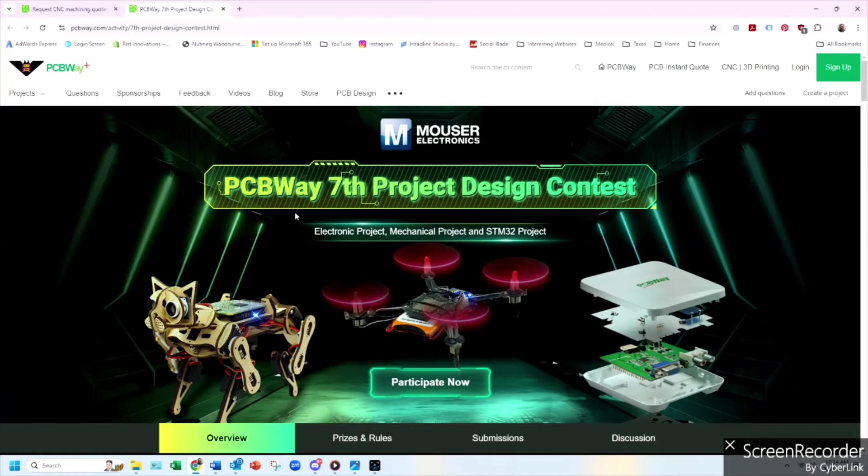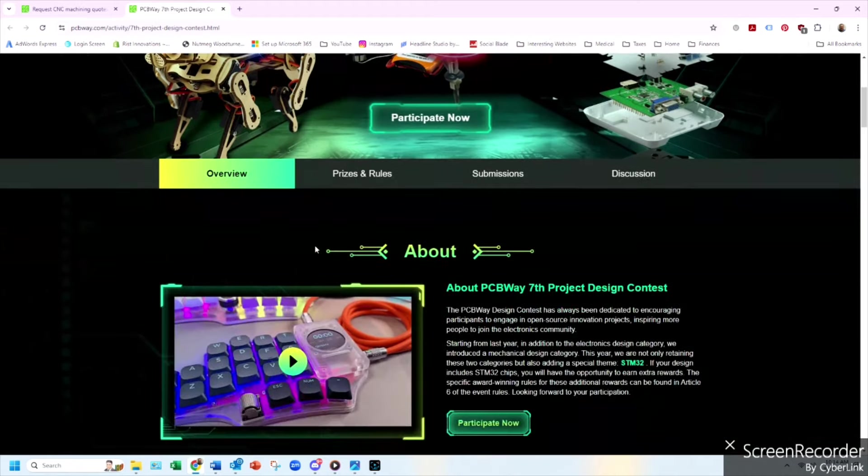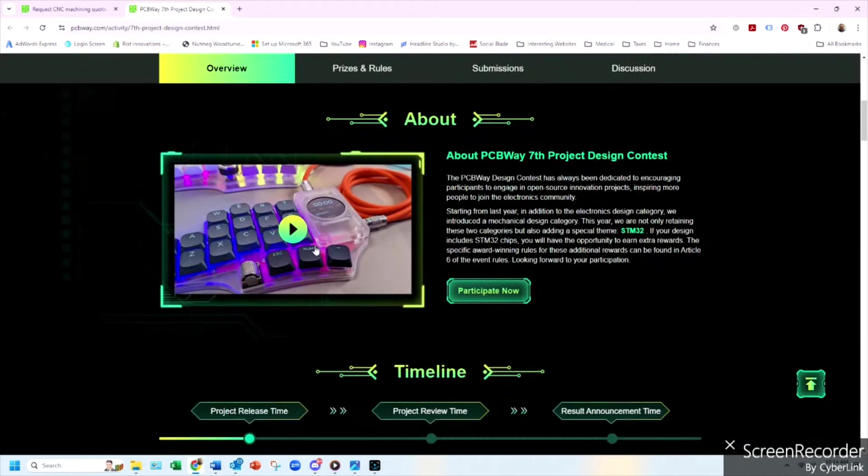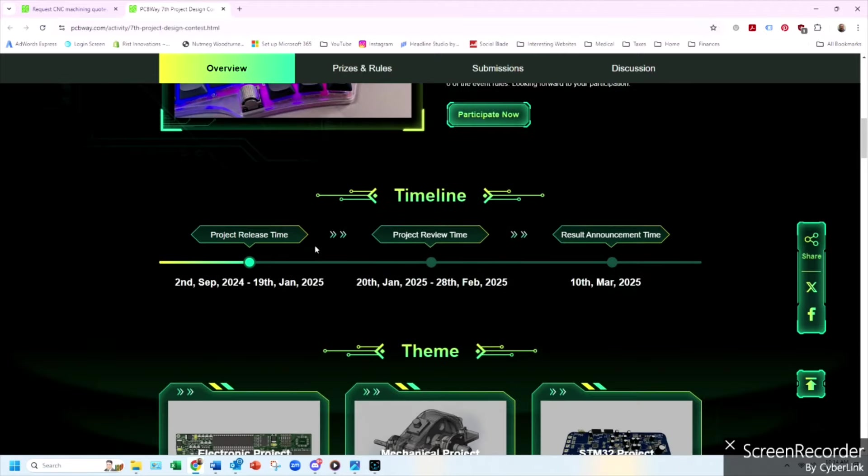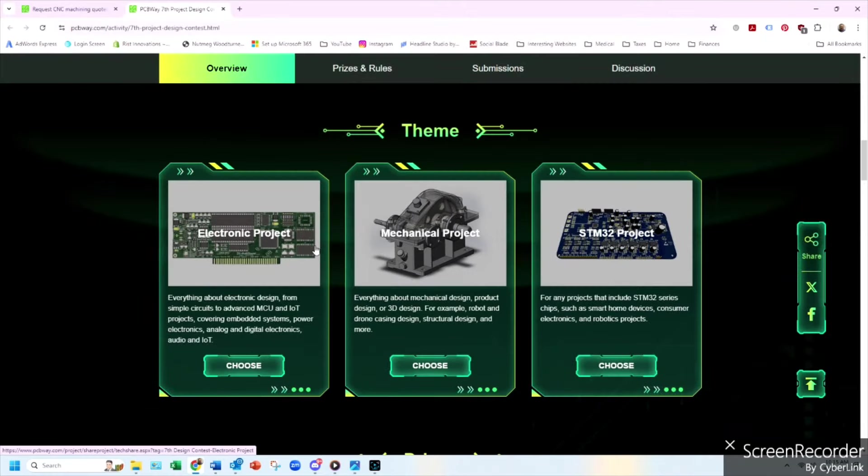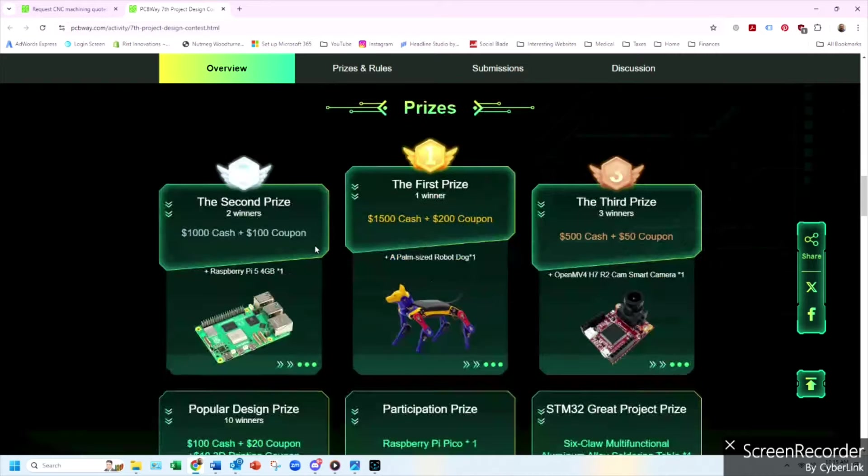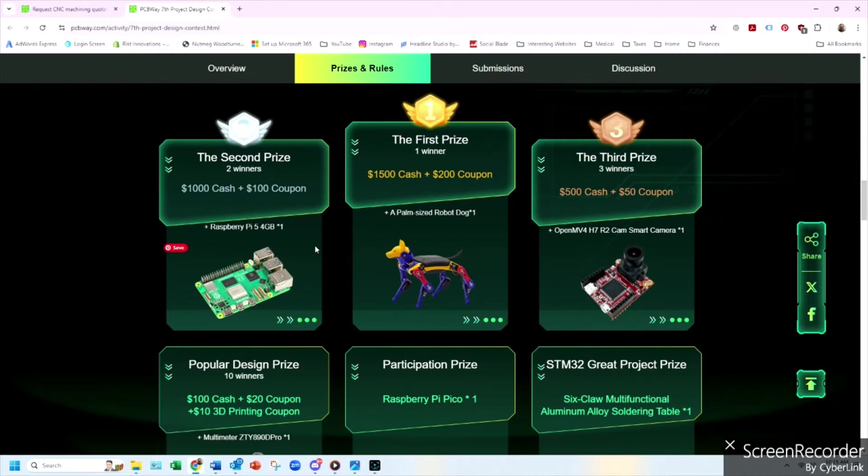PCBWay currently has their seventh annual project design contest going on. You can submit your project in three categories: electronic, mechanical, or STM32 between now and January 19th, 2025. Winners will be announced on March 10th, 2025.